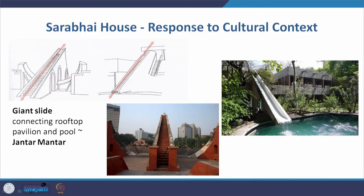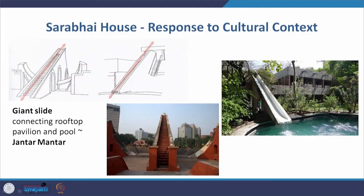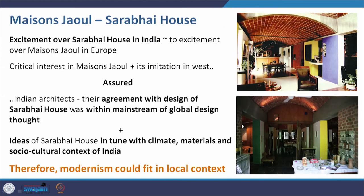Another cultural context element in the Sarabhai house is the slide coming in from the roof pavilion down to the pool — a giant slide similar to the ramp at Jantar Mantar found in cities of North India. So Corbusier is relating the Villa Sarabhai to that cultural reference.